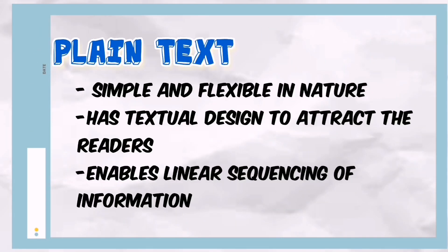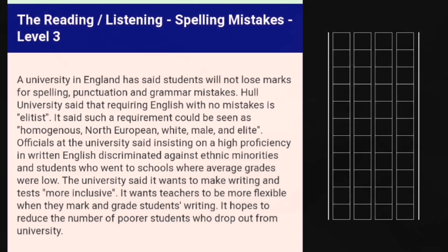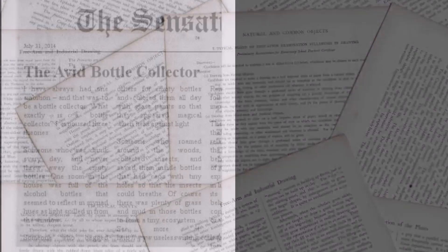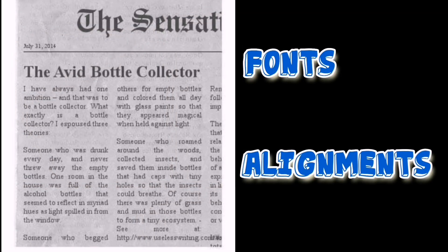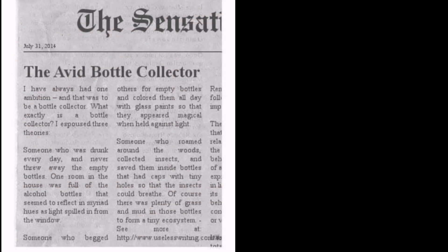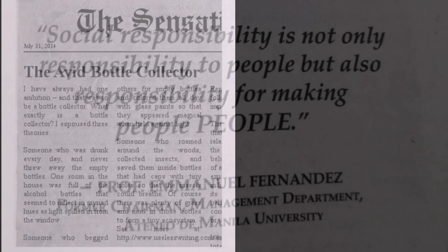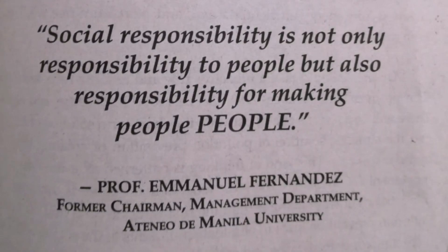Plain texts are simple and flexible, yet they have a textual design to represent meaning and attract the reader. Text enables the linear sequencing of information in a structured format. Typography — including fonts and alignments — helps us read quickly and easily, since titles are written in bold letters, and important quotes and messages are italicized. Like this.